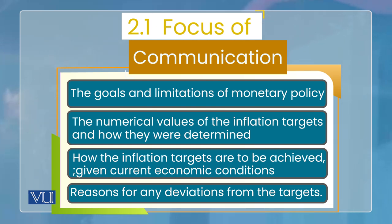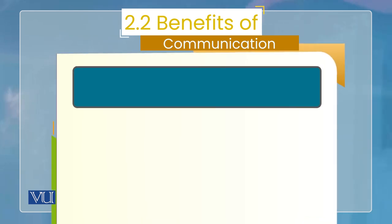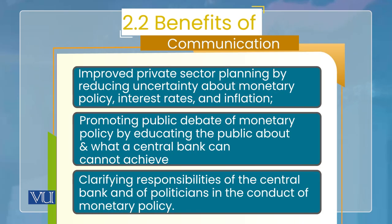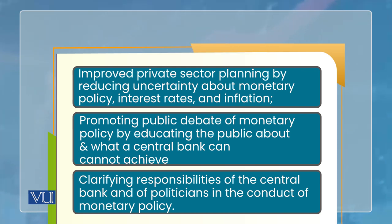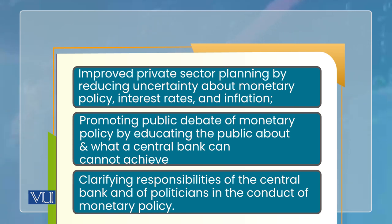If the target is missed in any month, quarter, or year, the central bank will explain why. These are the benefits shown on this slide. The benefit is that the business plans, investment plans, and saving plans of the private sector, businesses, and consumers will all improve, because people will be aware of what the central bank is going to do, where inflation will be in the future, and how serious the central bank is about achieving its target. Public debate is also promoted — when people are educated about what the central bank can and cannot do, a public debate is created.